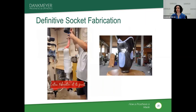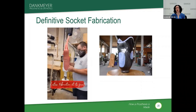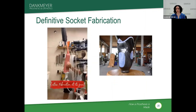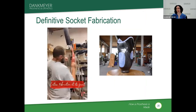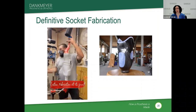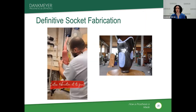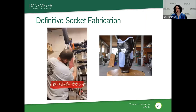Once we have the test socket right for the patient, we go to definitive socket fabrication. This example shows a lamination process — typically how we create an acrylic socket. We put layers of nylon and carbon fiber, then use an acrylic resin that starts as a liquid, saturates the various layers, and then hardens and cures. Once hardened, we break it out similarly to the test socket process. The final product, as shown on the right, has a combination of a flexible plastic inner piece and a rigid outer shell.